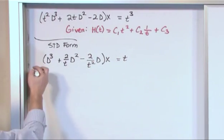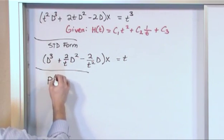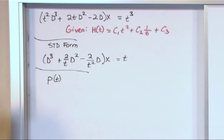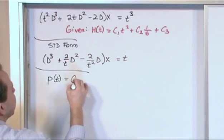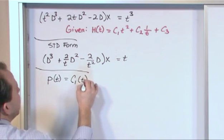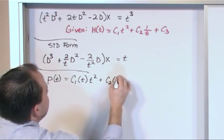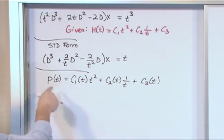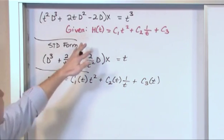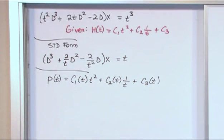The only thing that you really need to do at this point is guess the particular solution. So everything else follows exactly as it does before. Since we know what H of t is then we just guess that the particular solution is exactly of the same form: c1 of t times t squared plus c2 of t times 1 over t plus c3 of t. This is now the particular solution form. We just take H of t, we make all of the parameters vary.